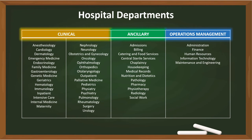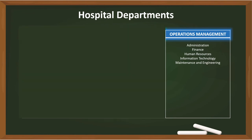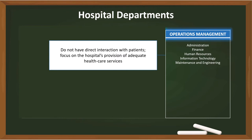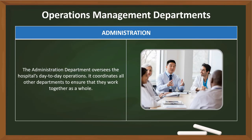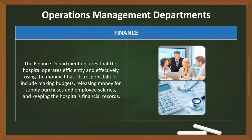Finally, we have departments under operations management. These departments do not have direct interaction with patients; rather, they focus on the hospital's provision of adequate healthcare services. The administration department oversees the hospital's day-to-day operations and coordinates all other departments to ensure that they work together as a whole. The finance department ensures that the hospital operates efficiently and effectively using the money it has. Its responsibilities include making budgets, releasing money for supply purchases and employee salaries, and keeping the hospital's financial records.